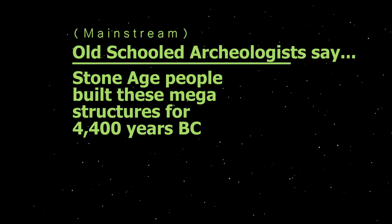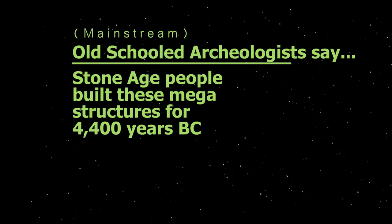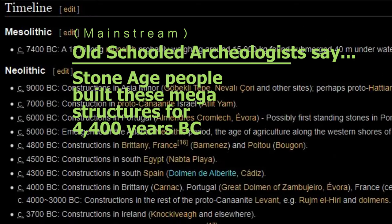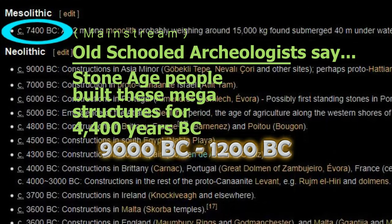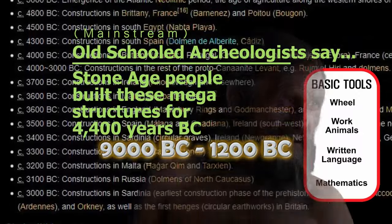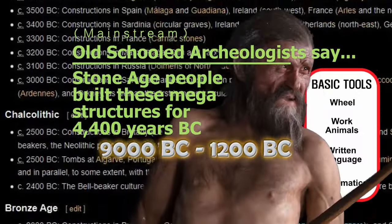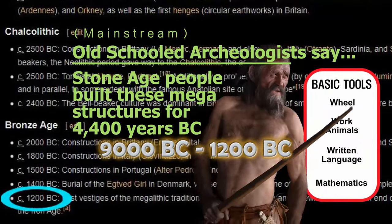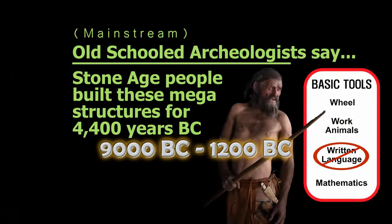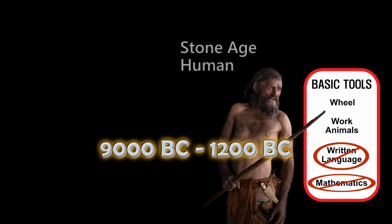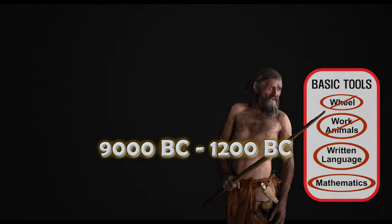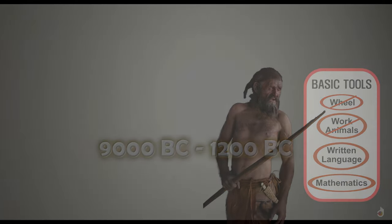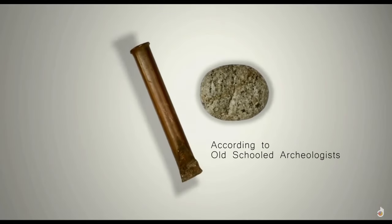Old school archaeologists tell us Stone Age people — cave dwellers and hunter-gatherers — constructed these big megalithic stone structures without the use of a written language, mathematics, the wheel, or any work animals.